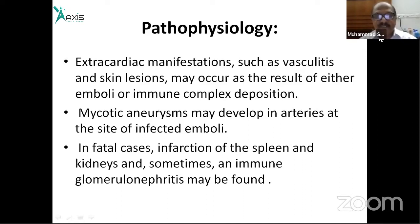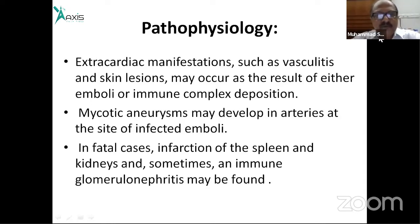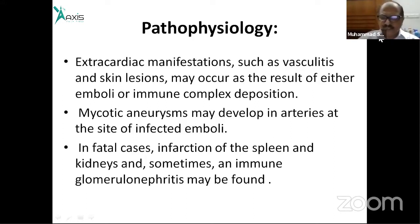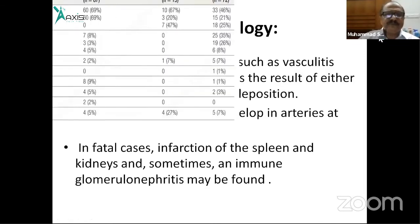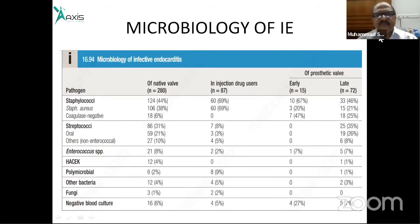In fatal cases, infarction of the spleen and kidney and immune-complex glomerulonephritis may be found. There may be petechial hemorrhages, splinter hemorrhages, or Roth spots. The microbiology includes staphylococci, streptococci, enterococci, the HACEK group, polymicrobial, and other bacteria including fungi and culture-negative organisms.